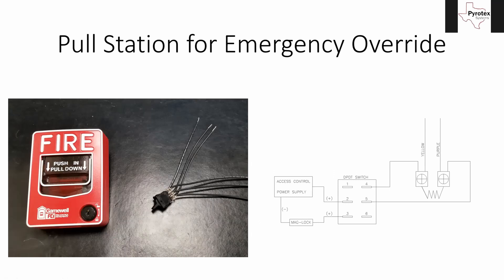For access control, like all fire alarm applications, we always need a double action pull station — that's what we use here. But for access control specifically, we need the double pull, double throw switch. And this is only used in man traps.